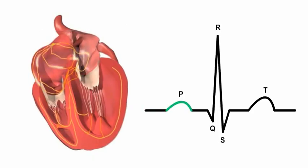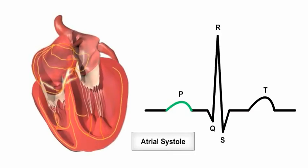The signal spreads across both atria, causing the muscle cells to depolarize and contract, inducing a phase known as atrial systole. On the ECG, this atrial depolarization is represented by the P wave.